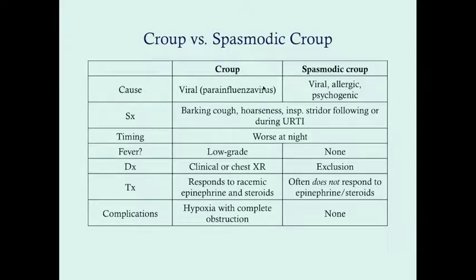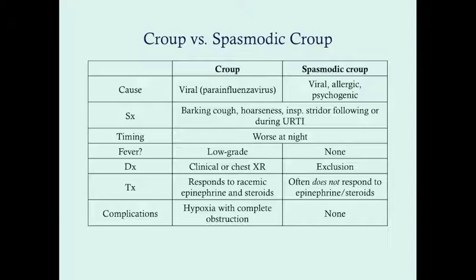Spasmodic croup encompasses all the causes of croup, also including allergic, GERD, and psychogenic causes. The symptoms are pretty similar — they'll probably be a little more severe in croup than in spasmodic croup — but they include the barking, seal-like cough, hoarseness, and possibly inspiratory stridor, which may follow or occur during an upper respiratory tract infection.